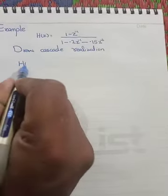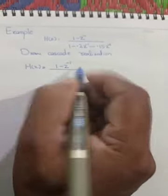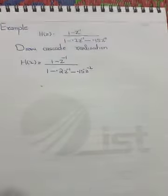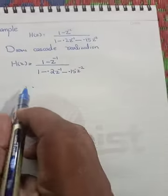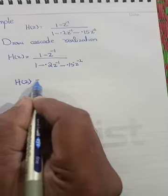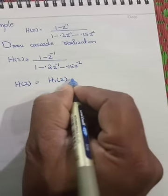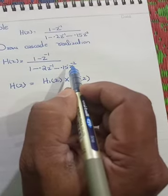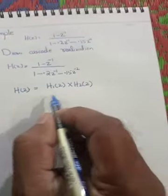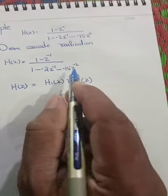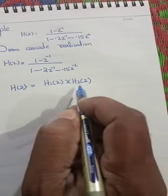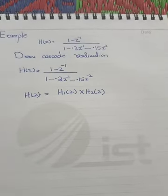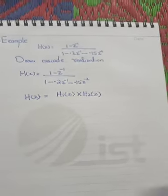H of Z is given as: (1 minus Z inverse)(1 minus 0.2 Z inverse minus 0.15 Z inverse squared). We have to arrange this system H of Z into subsystems H1 of Z and H2 of Z. Here you can see that the maximum power of Z is 2, so this system can be H1 of Z and H2 of Z. If Z's power were minus 3, then we would have H1, H2, and H3 of Z.